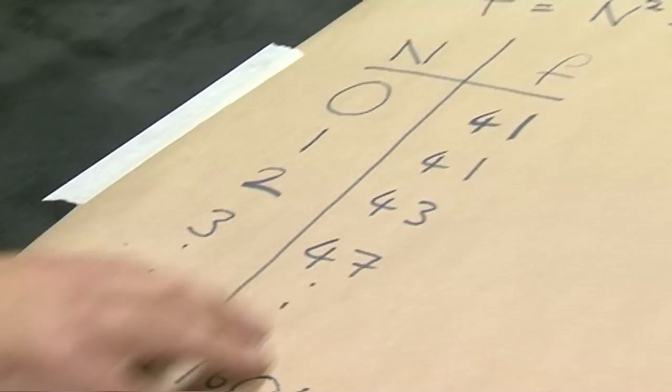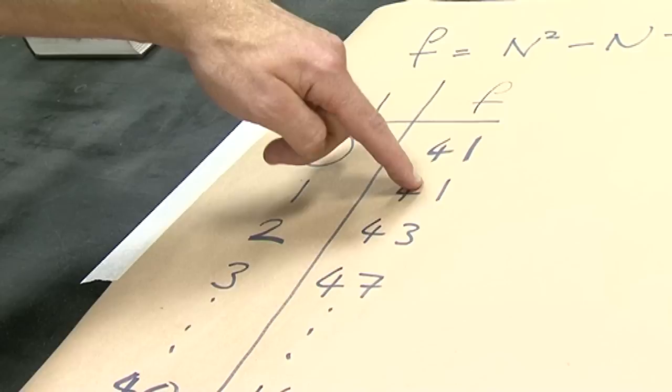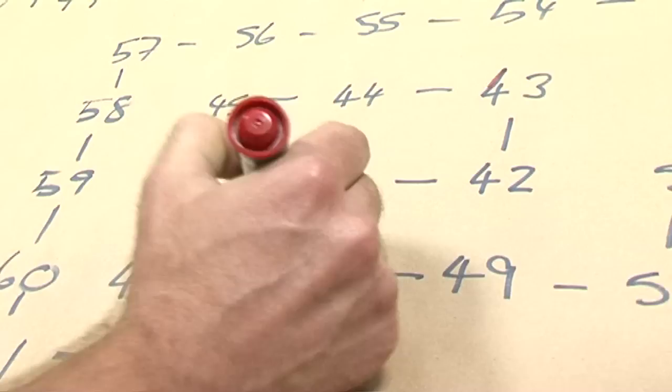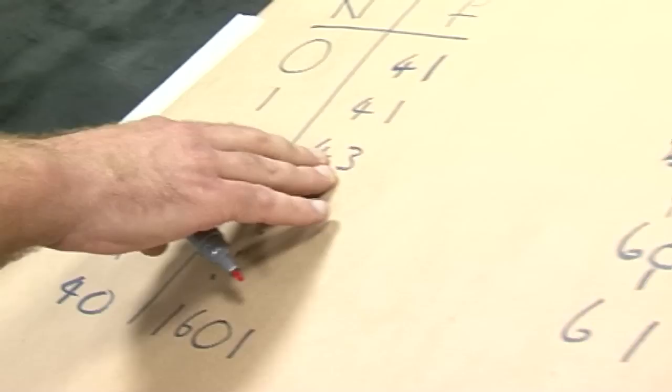So our first number in the series, for n equals 1, we get 41. And I've put that in the middle. Nice big circle. Then our second number is 43. Well, I put that one up here. 47 is down here.